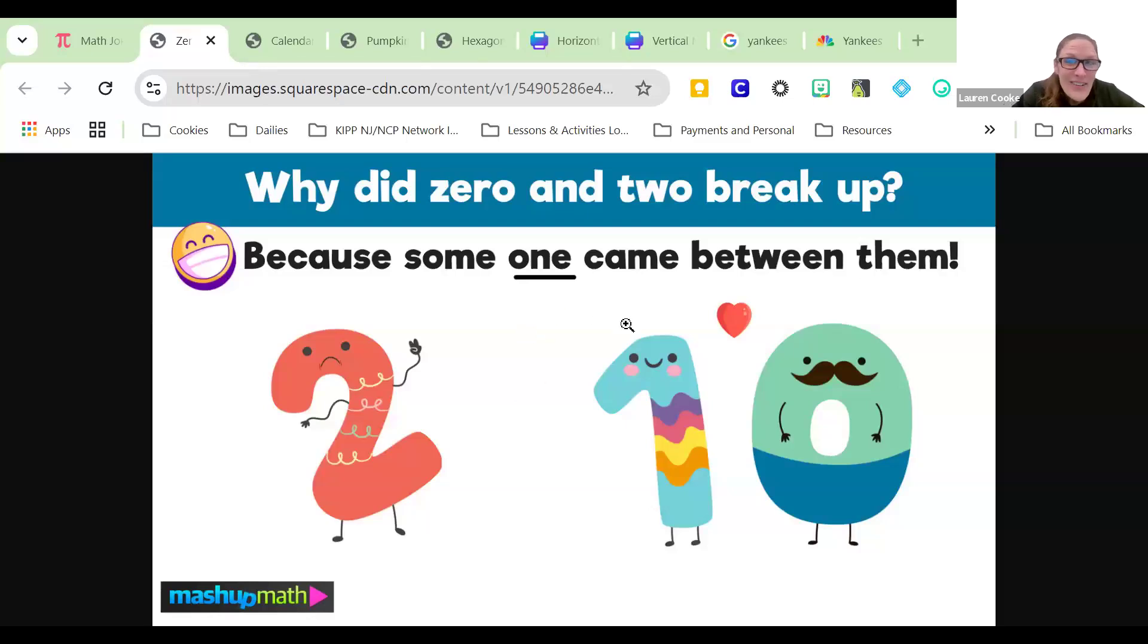I'm going to start off with a joke. Here we go. This is ridiculous. Why did zero and two break up? Because someone came between them. It's like zero, one, two. Two looks pretty upset, definitely saying peace. One and zero look pretty happy. Just silly.